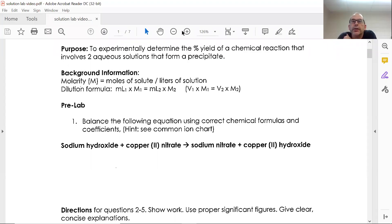This is video one of our solutions lab, and the goal of this lab is to determine the percent yield of a chemical reaction where two aqueous solutions form a precipitate. Remember, that precipitate is a solid formed when two solutions combine. That doesn't always happen, but it will for this experiment.